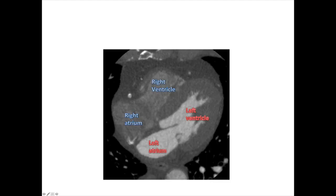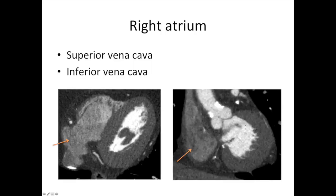The right side is the one near the front of the body. This is the sternum here, and this is the rib cage. The two chambers further towards the back, swung round a little, are the left chambers. So: right atrium, right ventricle, left atrium, left ventricle. Let's look at them in more detail. The right atrium is this structure in here, and it's where the venous blood flows into the heart — through the superior vena cava and through the inferior vena cava into the right atrium.